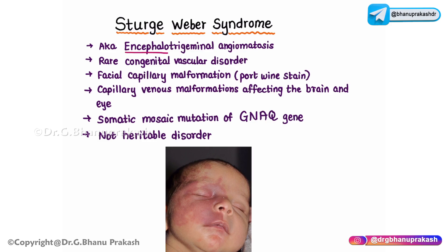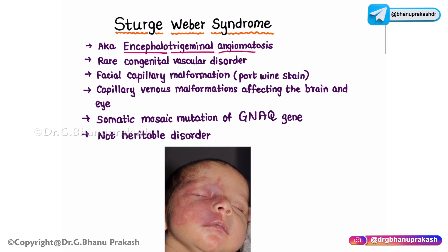'Encephalo' refers to the brain. In Sturge-Weber syndrome, there are abnormal blood vessels called angiomas present in the brain, particularly in the leptomeninges — the membranes that cover the brain and spinal cord. 'Trigeminal' pertains to the trigeminal nerve, the fifth cranial nerve responsible for sensory innervation of the face. Angiomas involve the trigeminal nerve branches, especially V1 and V2, leading to the characteristic facial port wine stains.